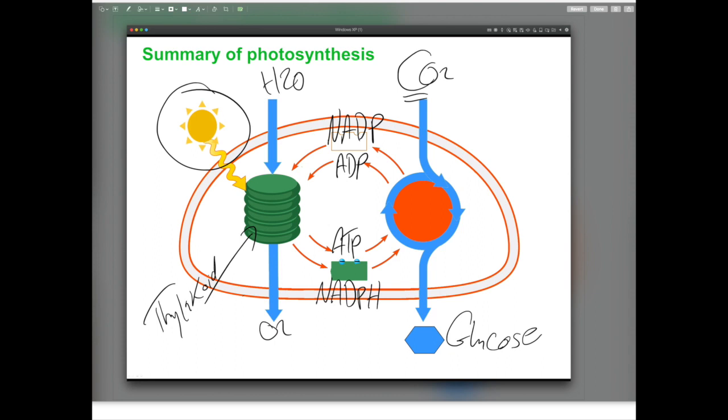As you can see that both the light reactions and the light independent reactions are very interconnected. If light is missing, then both the light reactions and carbon fixations will stop. If carbon dioxide was also missing, then this will stop the recycling of NADP and ADP, and this will stop the light reactions.